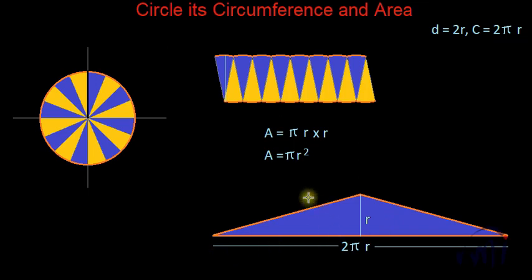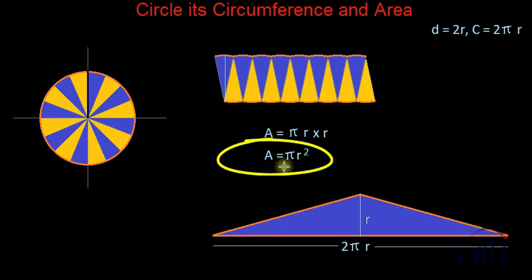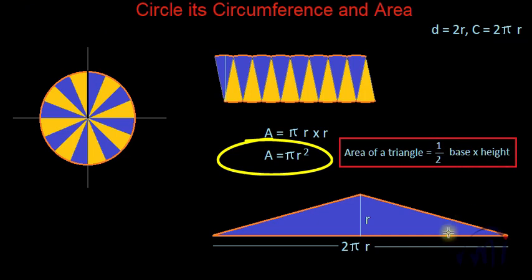From here also we get the area of the circle as πr², because the area of a triangle is (1/2) × base × height, and base in this case is 2πr — the circumference of the circle — and height is equal to the radius of the circle.